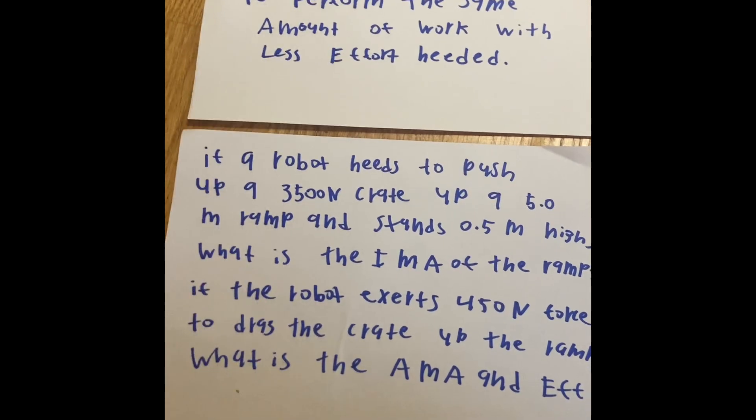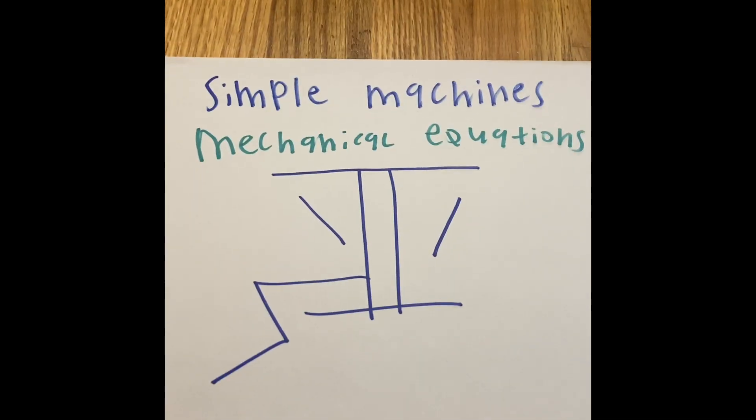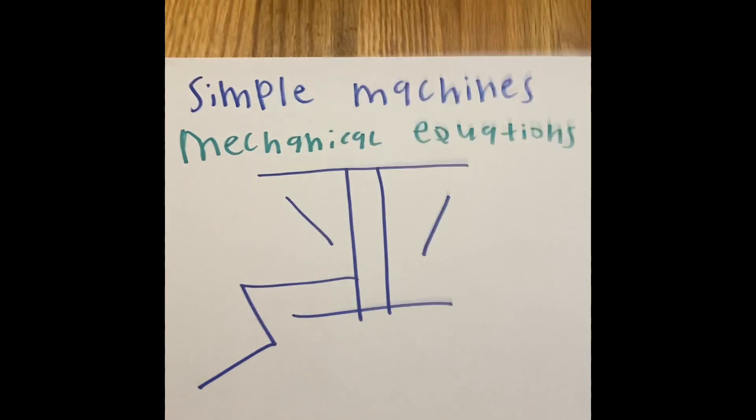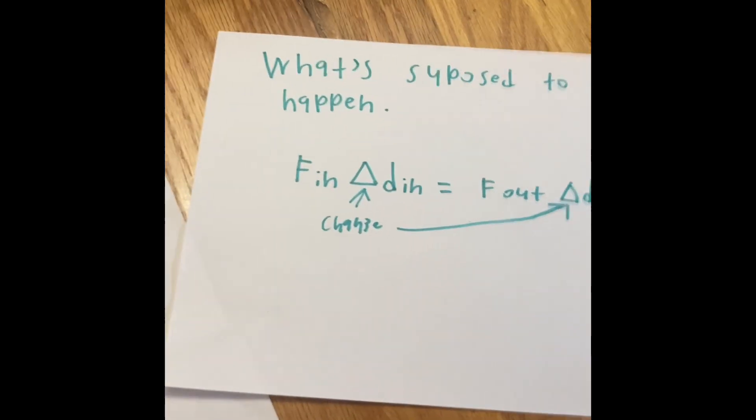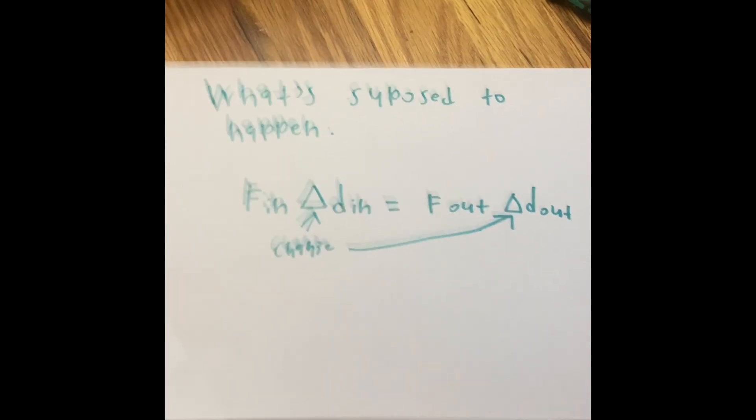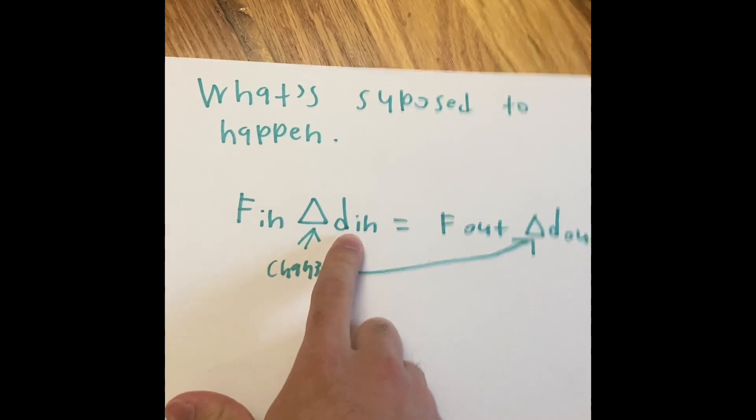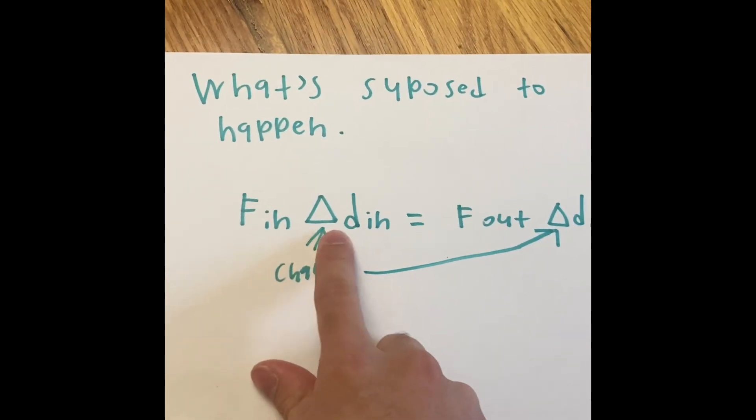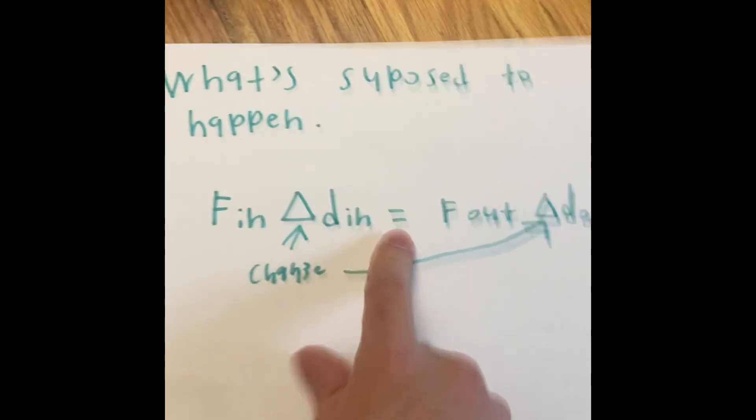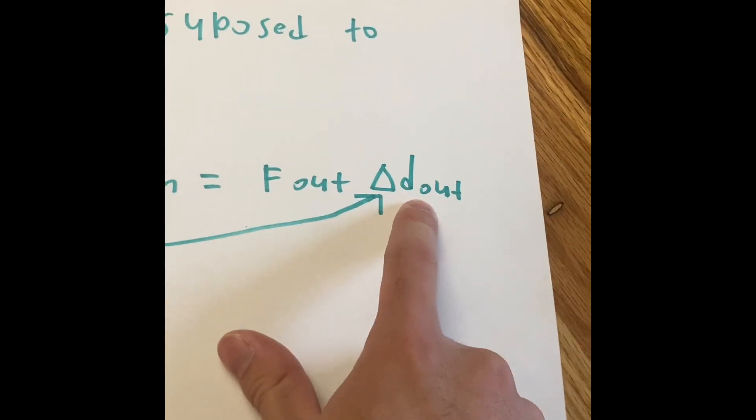Well, when we talk about some kind of machine that is working, or when machines do some kind of work, there is one thing that is supposed to happen to complete that work. What is supposed to happen is right over here. So we have the force in, then we have the change in D. So the force that is put in, and the change of the distance in, is equal to the force that is outputted to the change of the distance output.